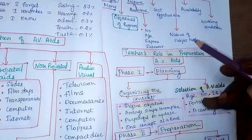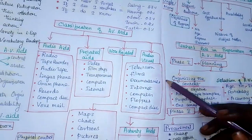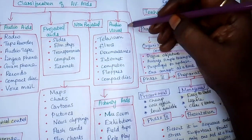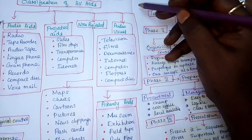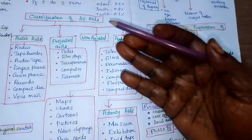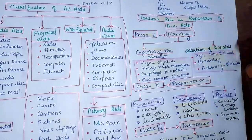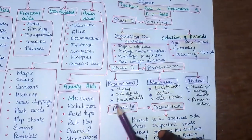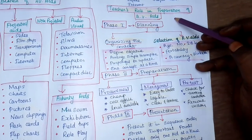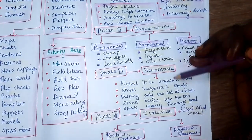For MSc Nursing students, an important question is the teacher's role in preparation of AV aids. For BSc and GNM students, the question is usually to classify AV aids or to draw Edgar Dale's cone of experience, starting from the blackboard up to the activity aid. For MSc students — as future teachers — this is a common ten-mark question. The teacher's role in preparation of AV aids has four phases: Phase 1 is Planning, Phase 2 is Preparation, Phase 3 is Presentation, and Phase 4 is Evaluation.